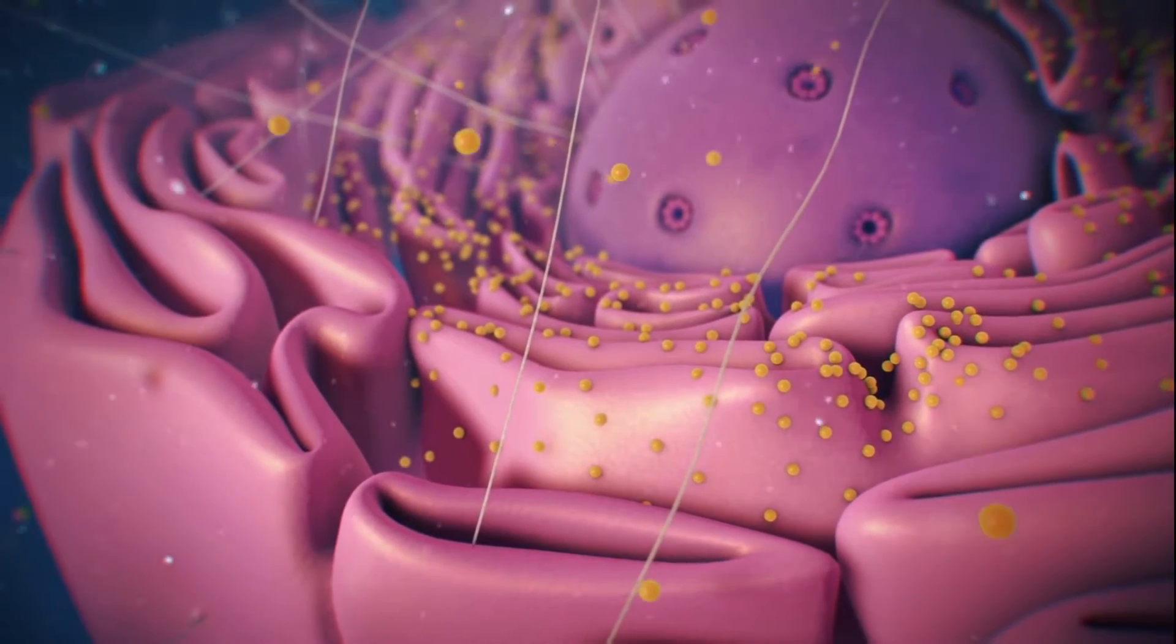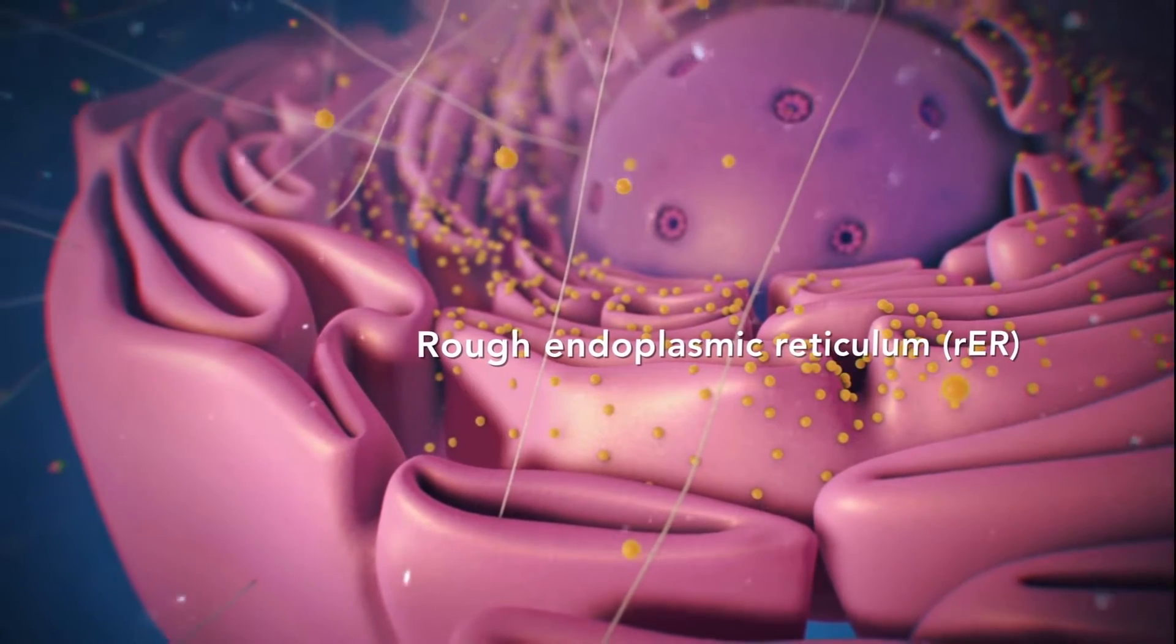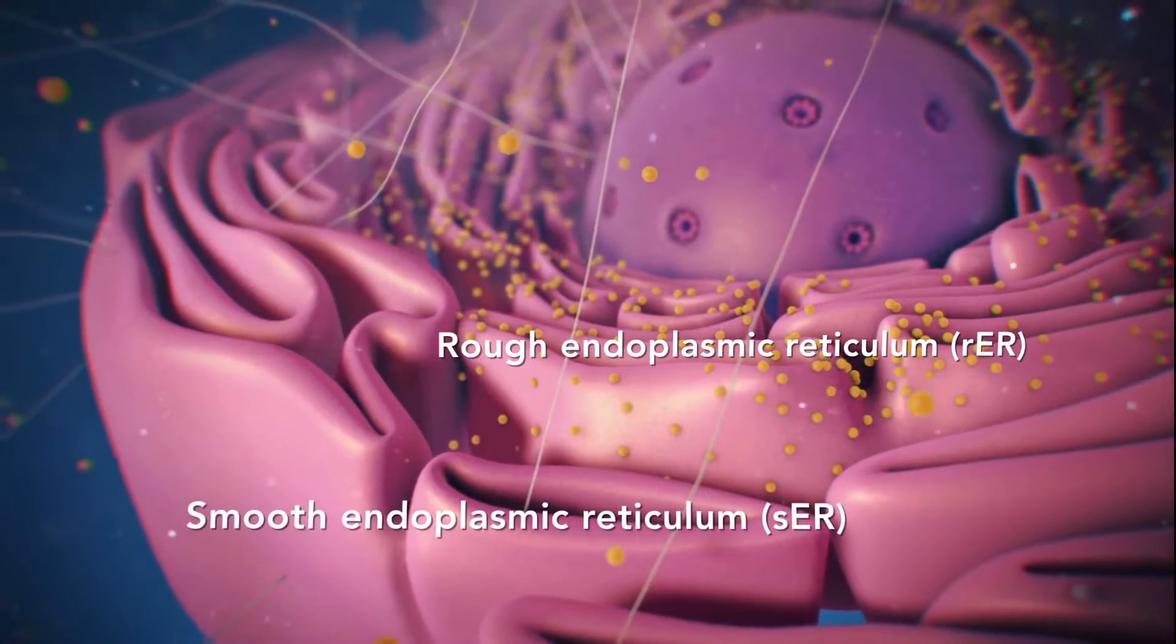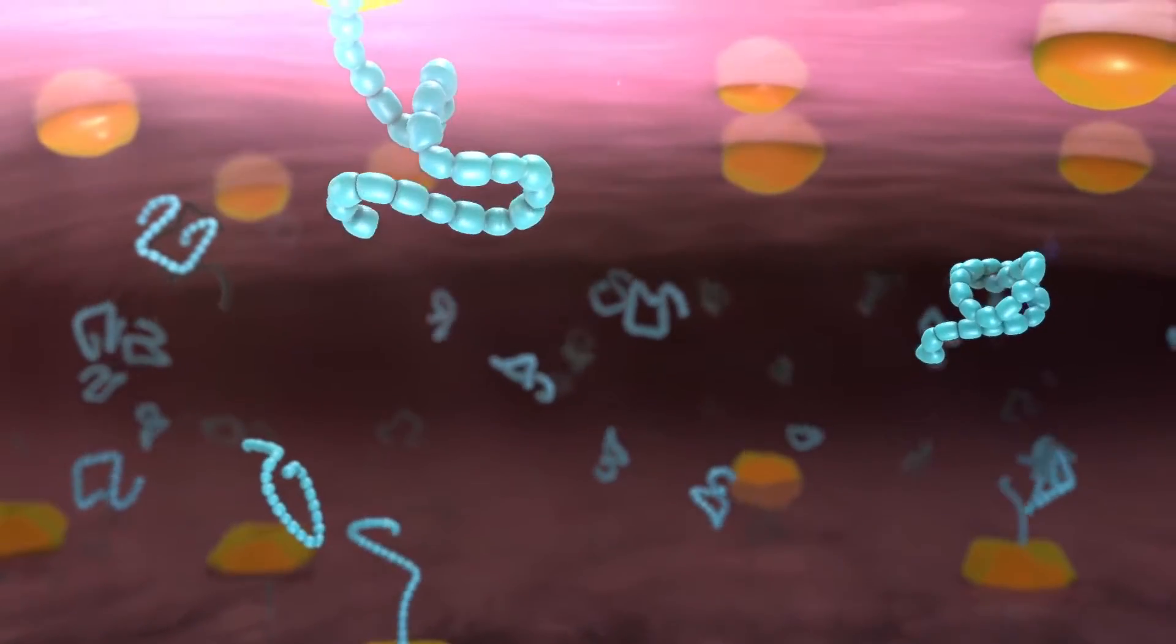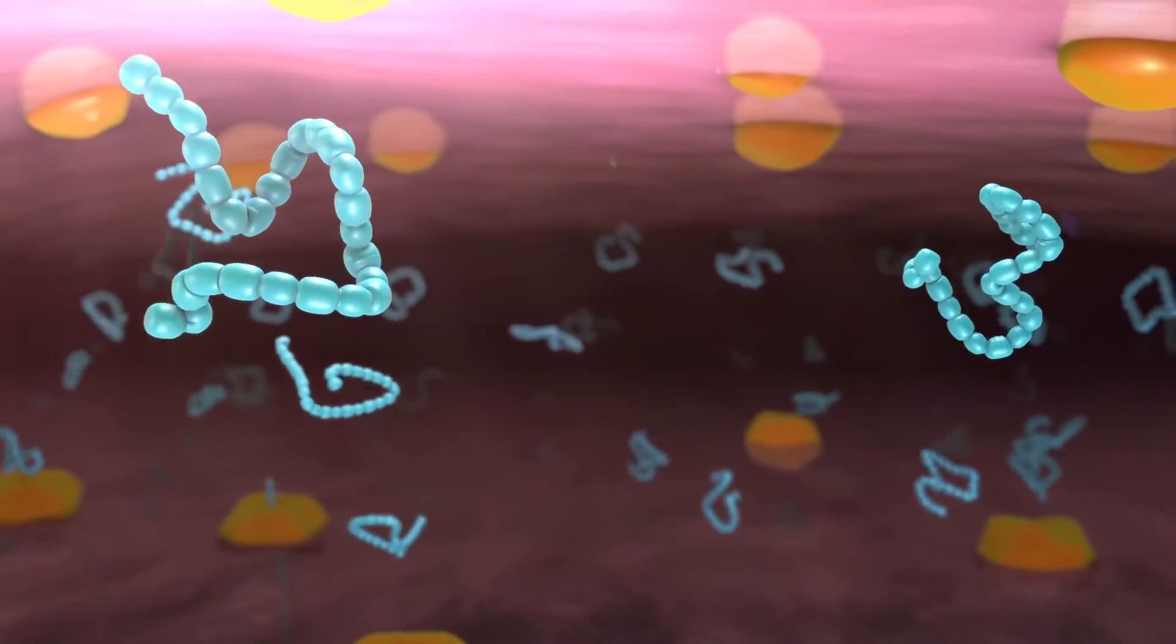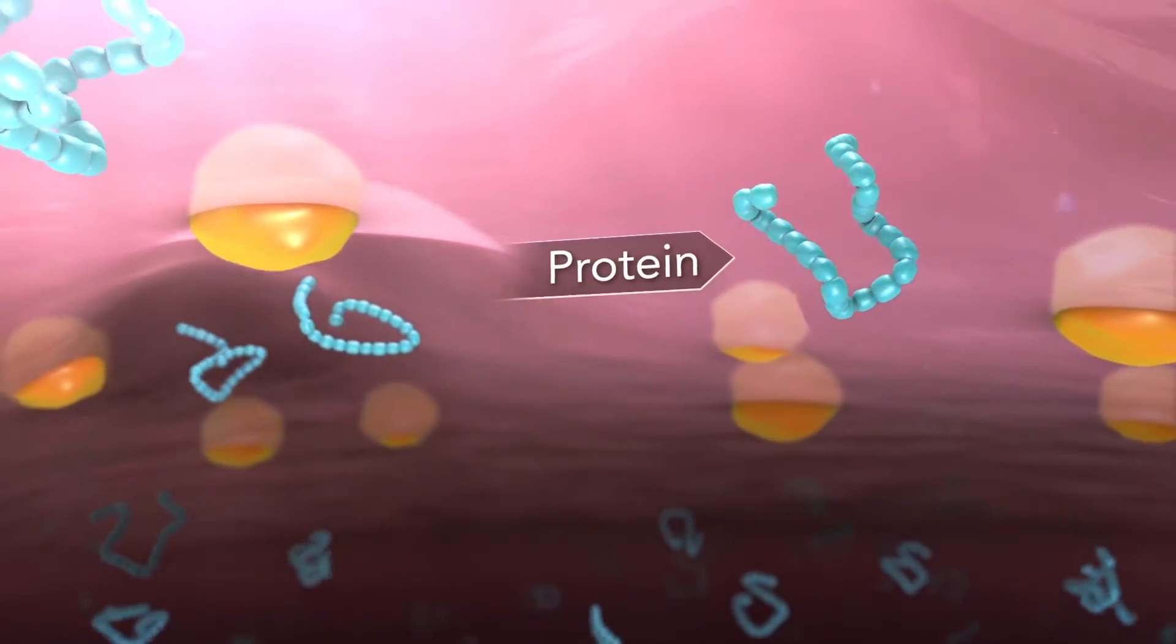There are two types of ER. Rough ER has ribosomes attached to it and smooth ER doesn't have ribosomes attached to it. The endoplasmic reticulum is a membrane-enclosed passageway for transporting materials such as the proteins synthesized by ribosomes.